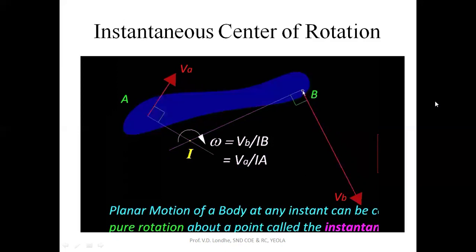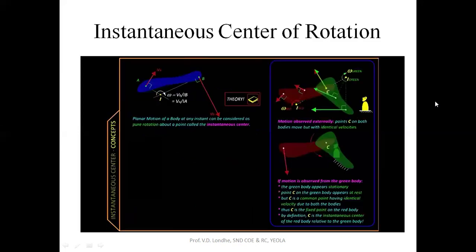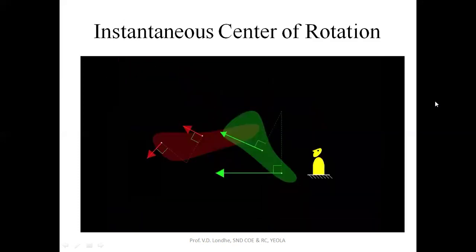To find the velocity of point B, we take the distance IB from the instantaneous center to the point and multiply it by omega. Next, we apply this technique to two rigid bodies. As before, we use the known velocities of two points in each body to find the instantaneous center of each body using the same perpendicular construction. We also determine their angular velocities.